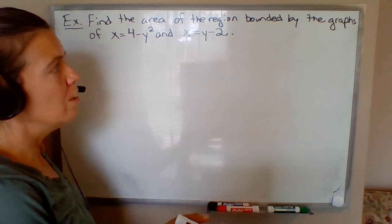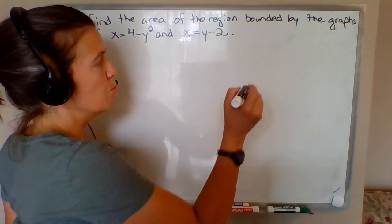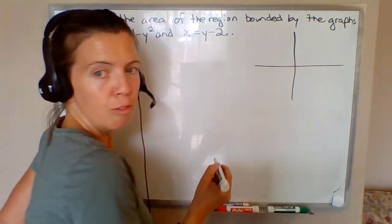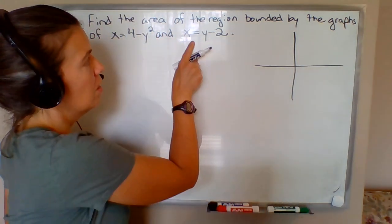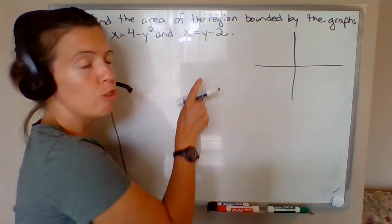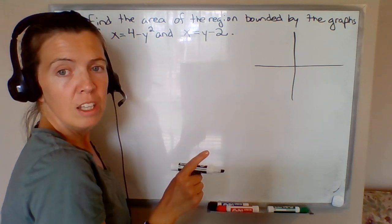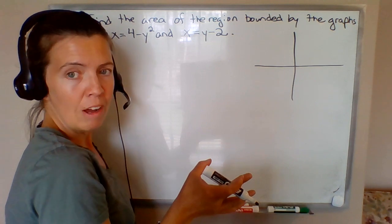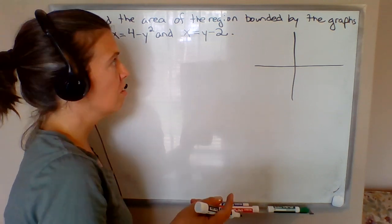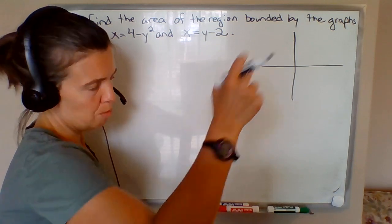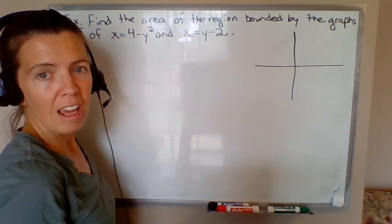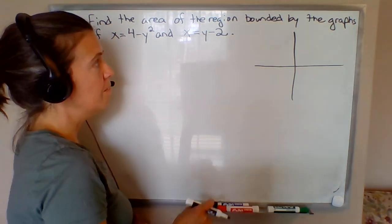The first thing we want to do is get a sketch of this region. We need to have at least a rough idea of what this region looks like. It's noteworthy that x and y are both to the first power in that equation, so we know the graph is a line. If we want to graph a line, we really just need two points.